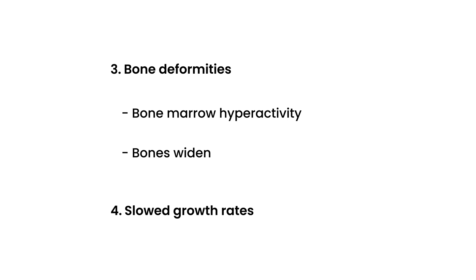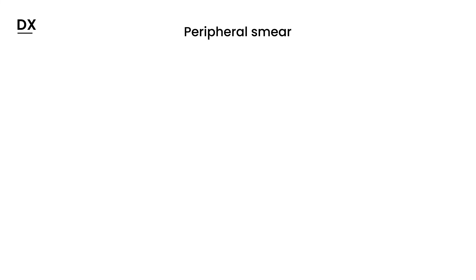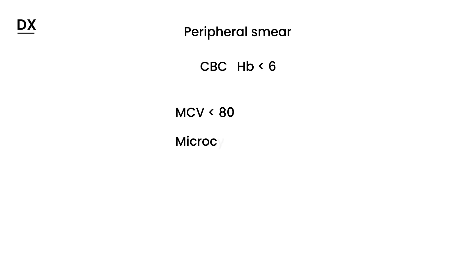How do you diagnose thalassemia? The most common initial test is a CBC, which gives you the hemoglobin count — the hemoglobin is often quite low. It can be less than 6; normal hemoglobin in an adult is between 12 and 16, so less than 6 is obviously very anemic. Another lab test is MCV, and the MCV value tells you what type of anemia — thalassemias are microcytic anemias.